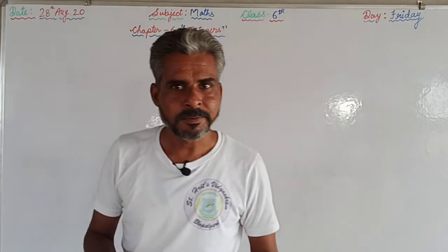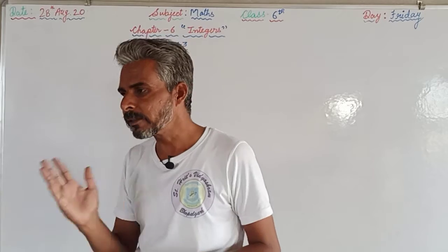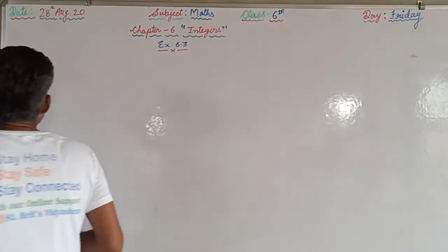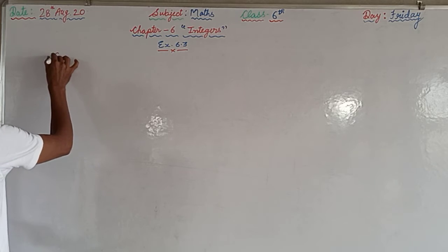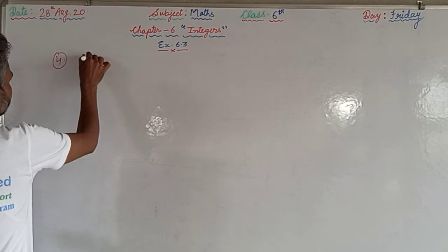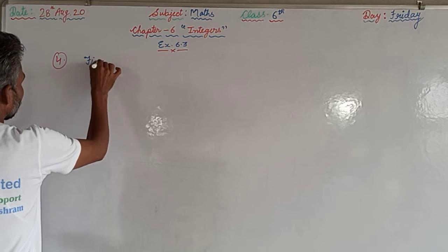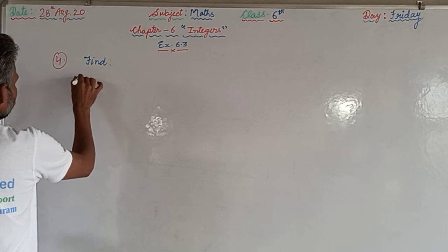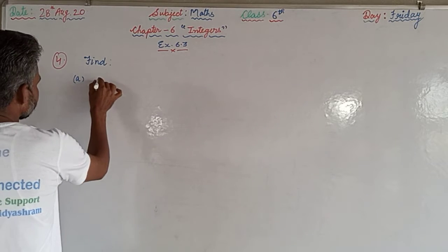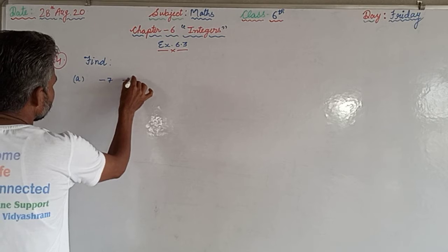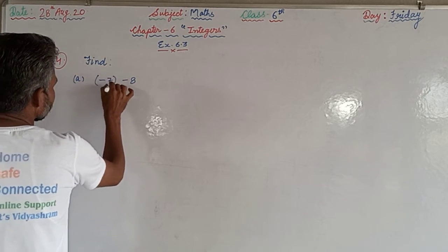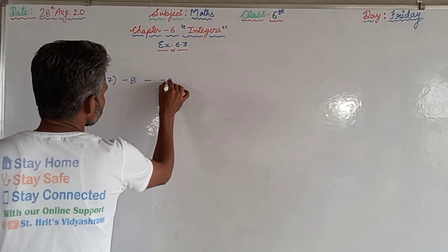Today we will discuss only one question — question number 4, the last question of this exercise as well as of this chapter. The first part requires us to find: minus 7 minus 8, and then minus minus 25.